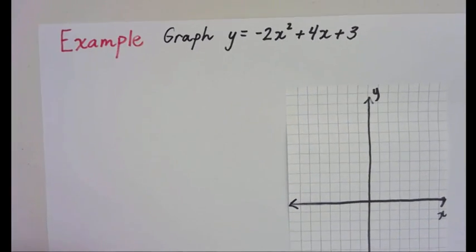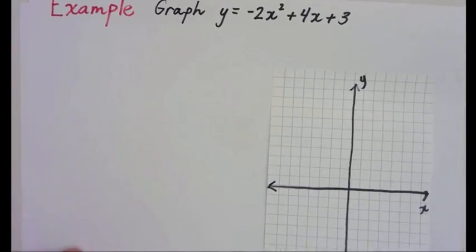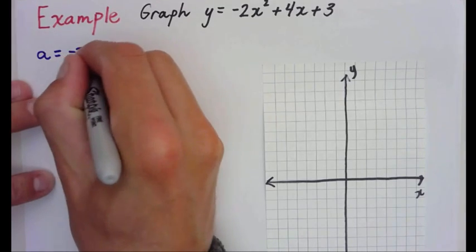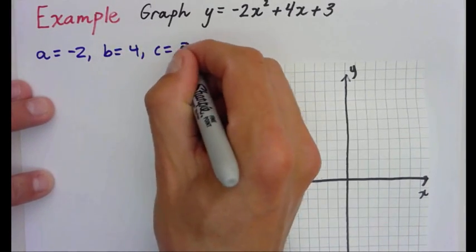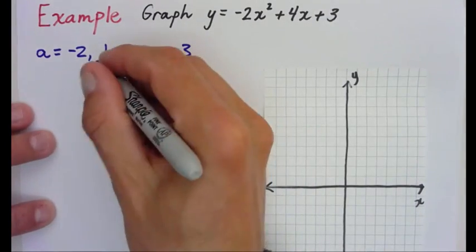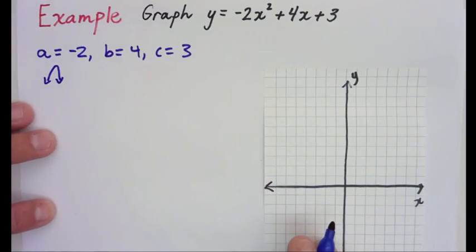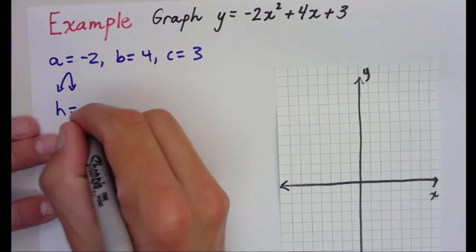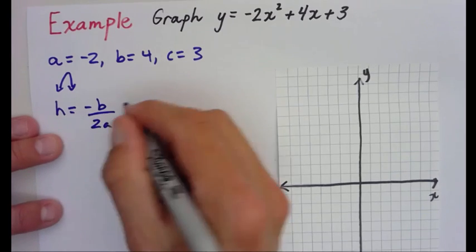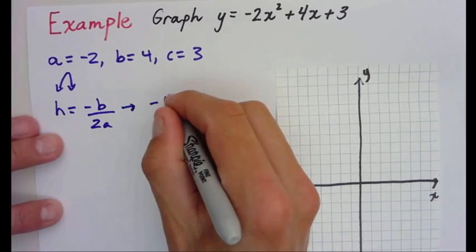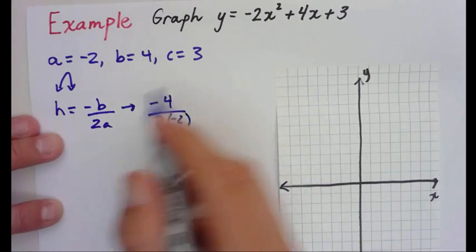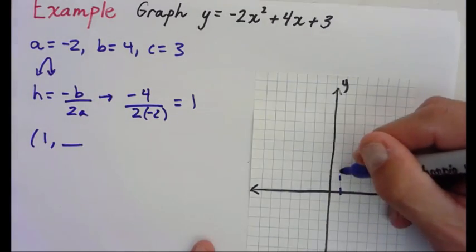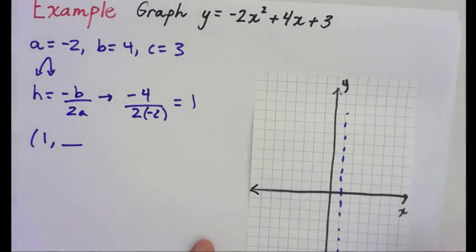Graph negative 2x squared plus 4x plus 3. We're going to graph this parabola in standard form and do the same things as the last example. Identify a, b, and c: a equals negative 2, b is positive 4, and c equals 3. My parabola is going to open down because a is negative. Now I'm going to find my vertex using negative b over 2a: negative 4 over 2 times negative 2 gives me 1. So the axis of symmetry is x equals 1.